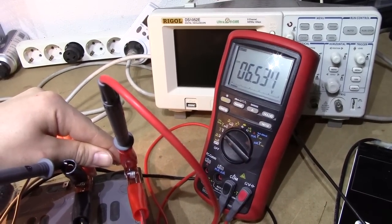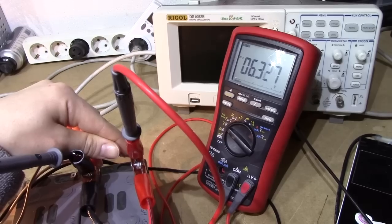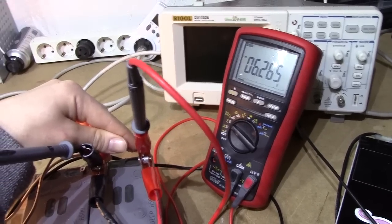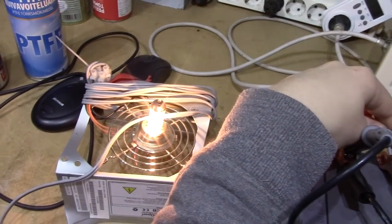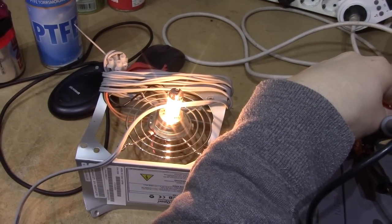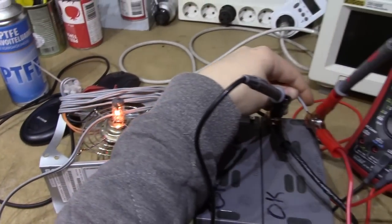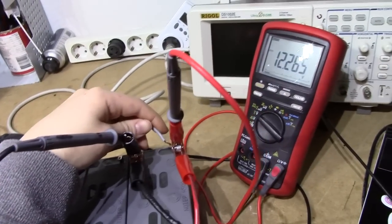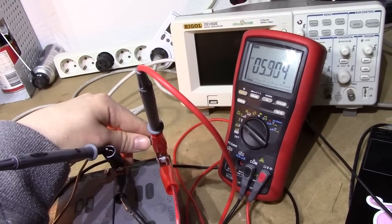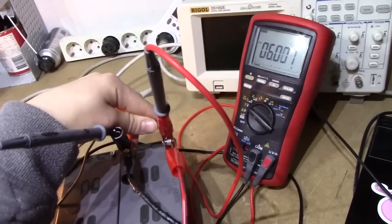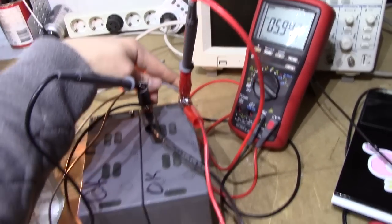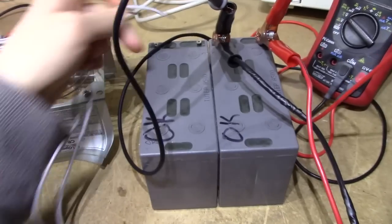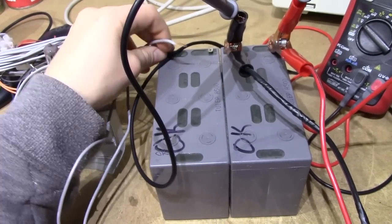There we go, doesn't quite make it as well. This one's not in quite as good condition, but it is definitely lighting the lamp. That's probably about, I'd say, six or seven amps running through this battery. Definitely not as impressed with this one though.